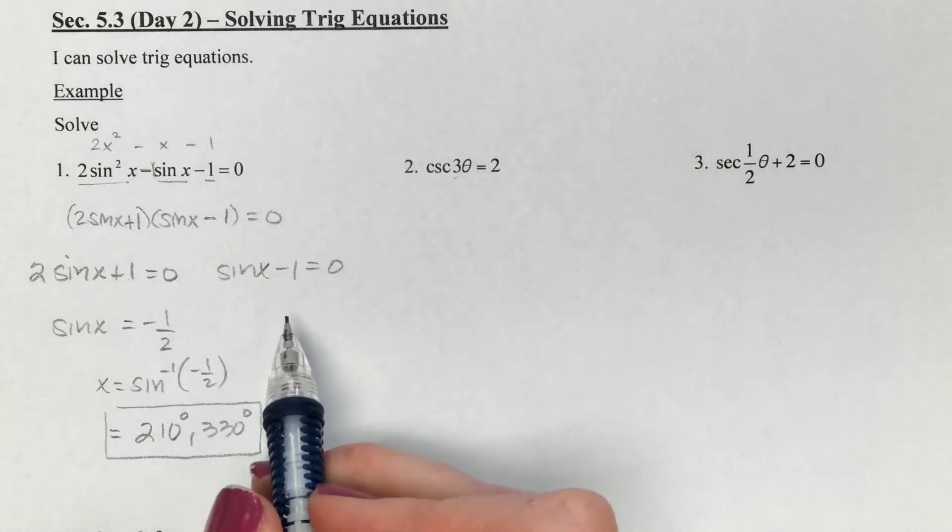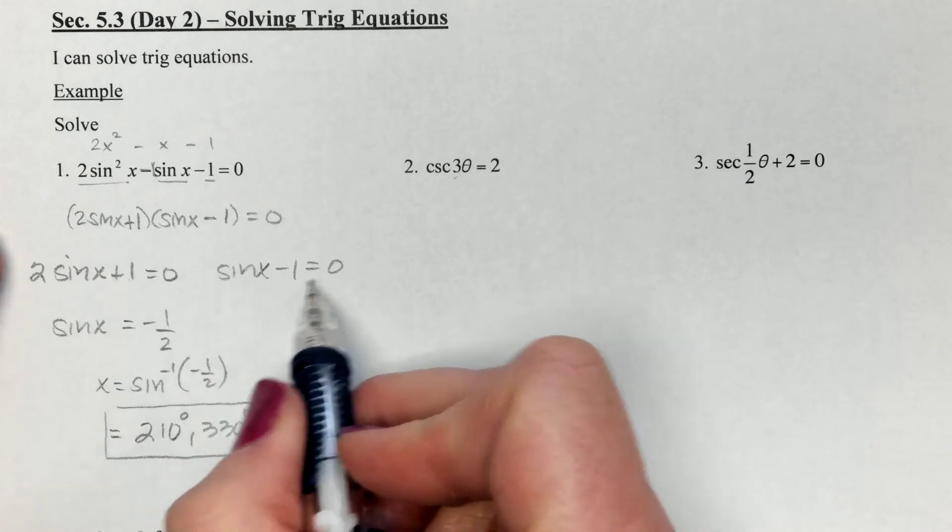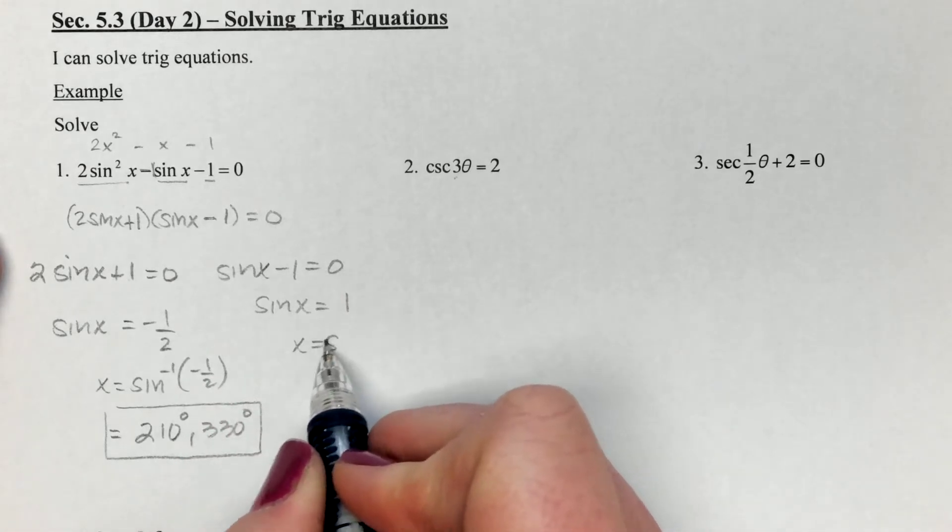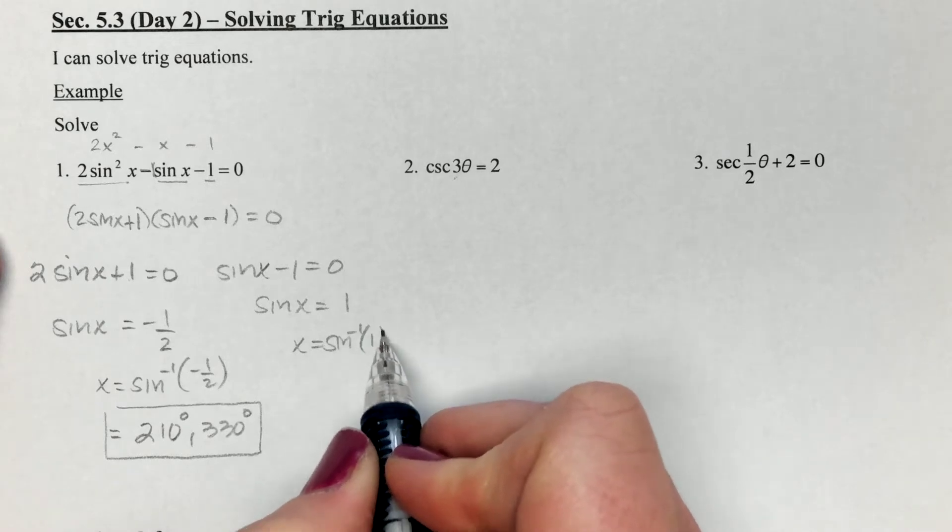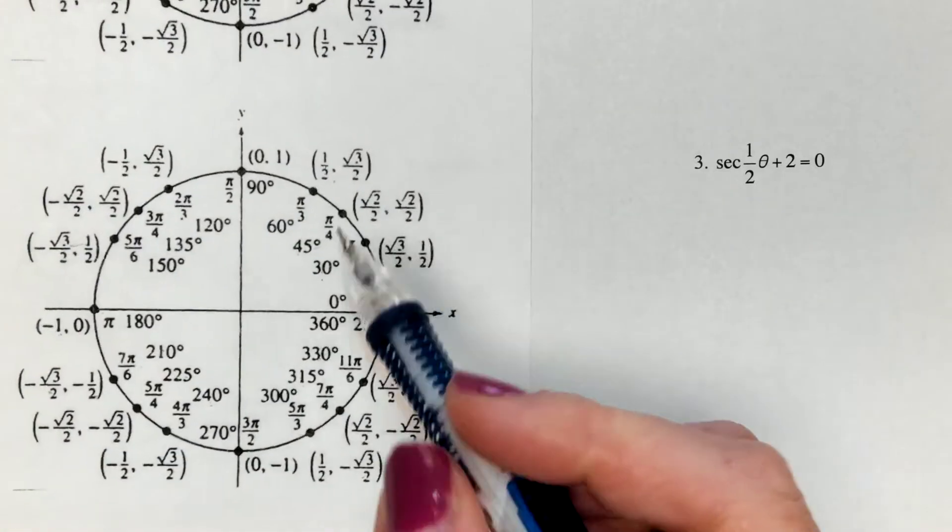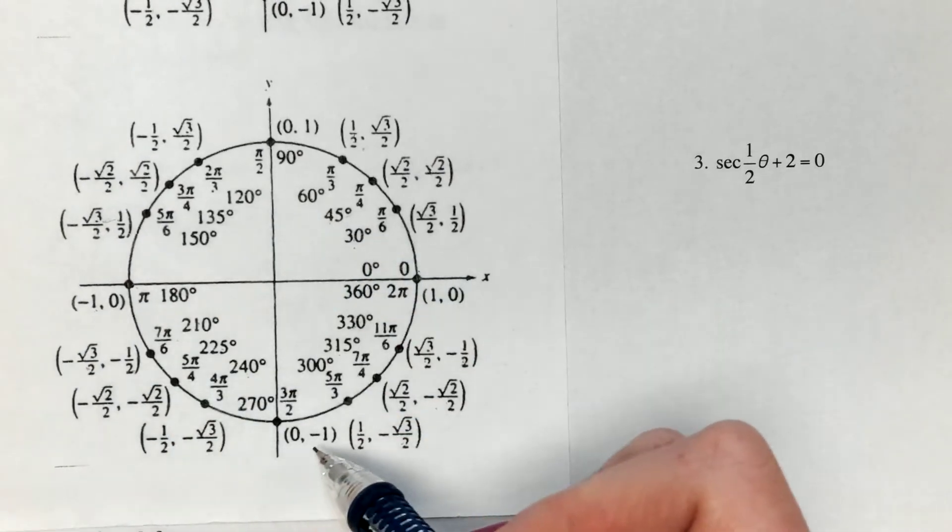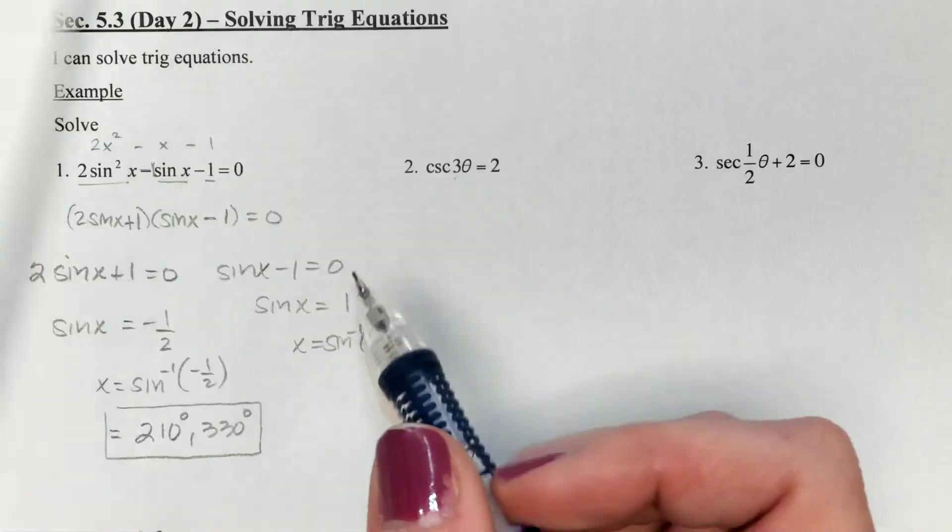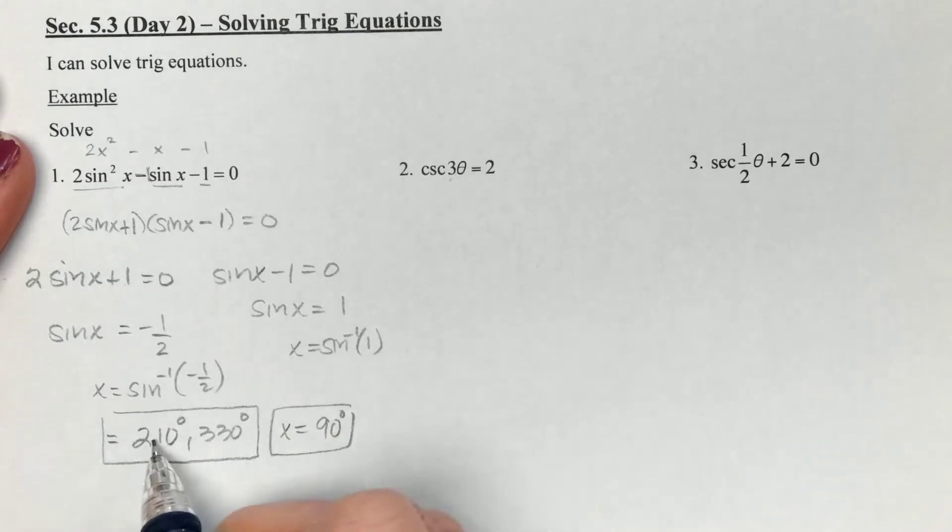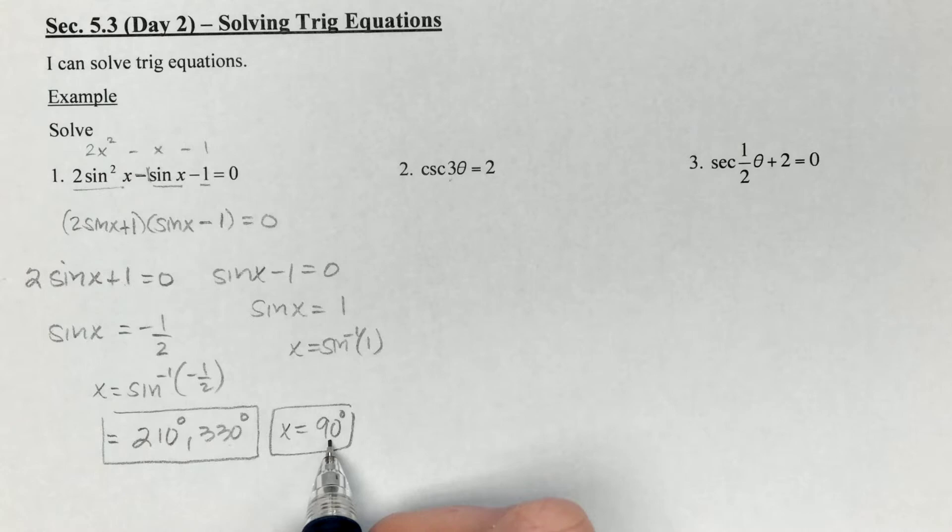Don't forget that degree symbol because you're telling me you're giving it to me in degree mode instead of in radian. Next up, we need to set this equal to zero. We need to solve for x. We're going to add that over, and we're looking for any angles that have a sine of one. That happens at 90 degrees. So we've got three different answers: 210, 330, and 90.